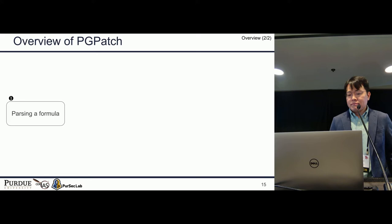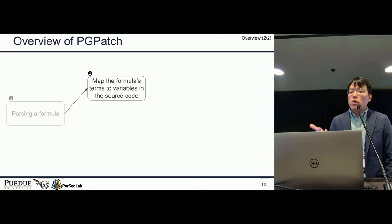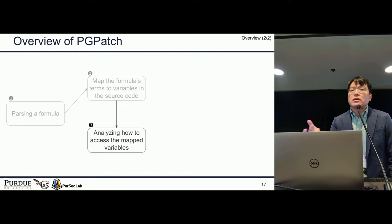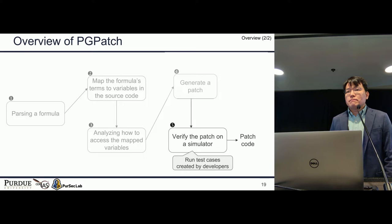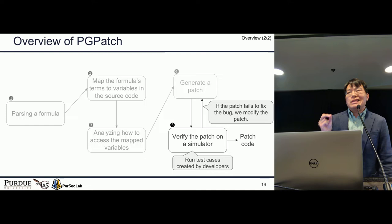Here is an overview of PGPatch. First, we parse a given formula. Second, we match the formula's terms with corresponding variables or functions in the source code. Third, we analyze how to access the mapped variable or function. Next, we generate a candidate patch. Lastly, to verify correctness, we run test cases created by developers. If the candidate patch fails to fix the logic bug, PGPatch tries to modify the candidate patch.